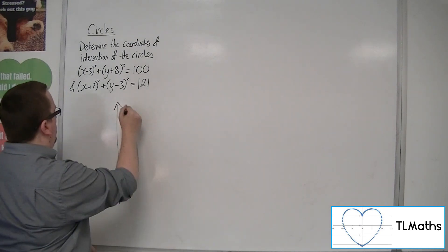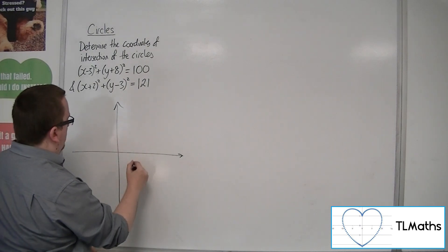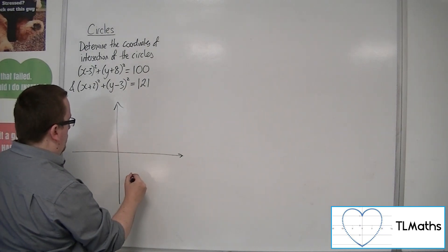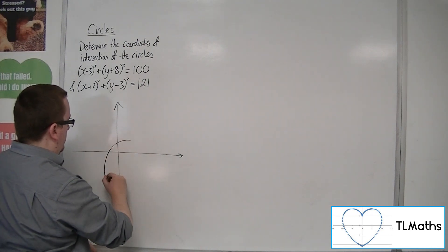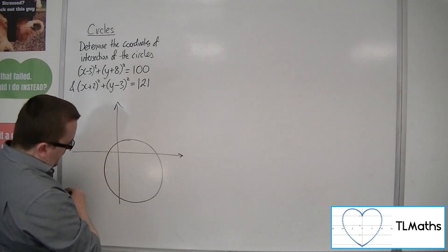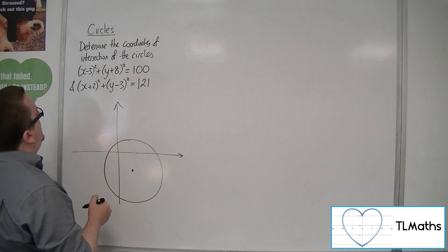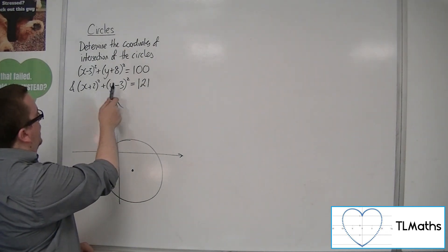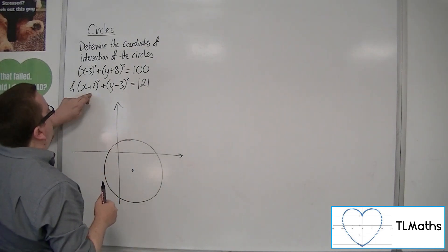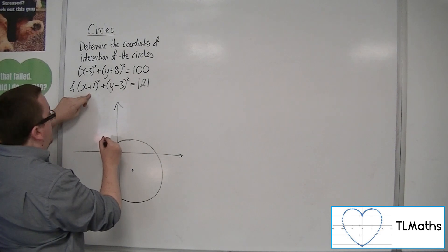So just a very quick diagram of what's going on. The centre (3, −8) is somewhere down here, with a radius of 10 — something like that. And then you've got this other circle: x plus 2 squared plus y minus 3 squared equals 121, so centre of (−2, 3) — a bit further along, a bit up — and a radius of 11.